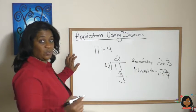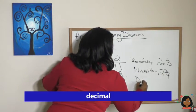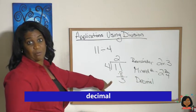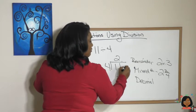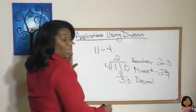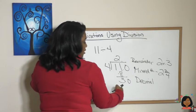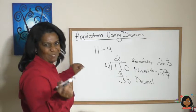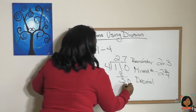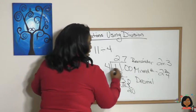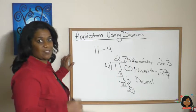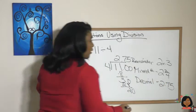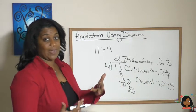The third way you learned to write it was as a decimal. As a decimal, we're not done with this division problem — we need to add a decimal point, add a zero, and keep going. Seven times four is 28, we've got two left over, add another zero, and we get a five. So this answer would be two point seven five.